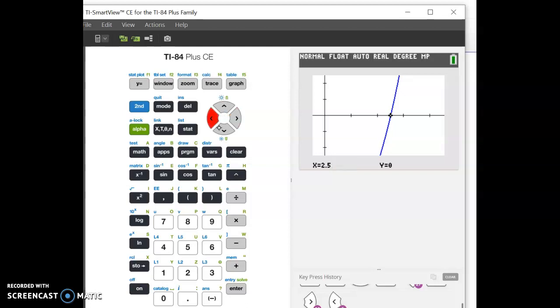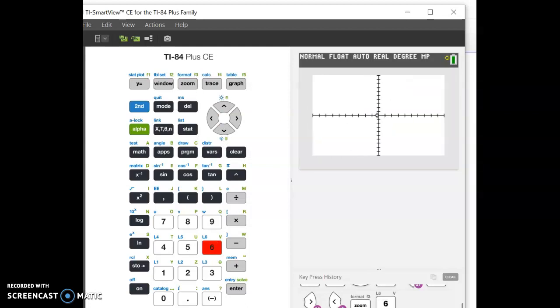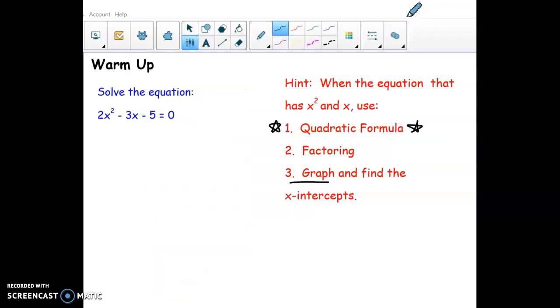Okay, so my answers are negative 1 and 2 and a half. So I'm going to zoom back to the standard window just so you can see that one more time. So when you graph, the answers are just where it crosses. So I have negative 1 and 2 and a half.